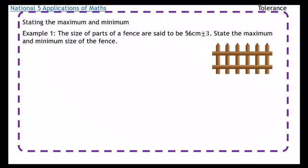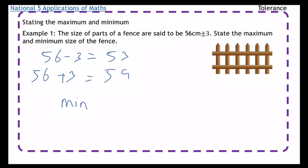Okay, so all you've got to do for that is do 56 take away 3 and 56 plus 3. So 53 is the minimum and the max is 59. But just make sure you write that, so you write minimum is 53 centimeters, don't forget the units, and the maximum is 59 centimeters.